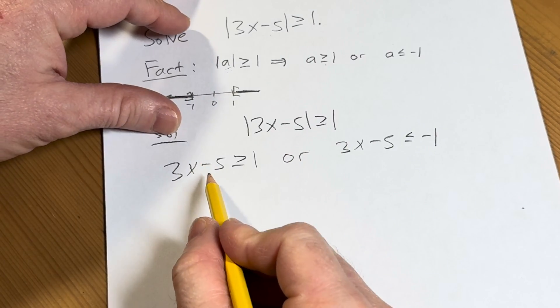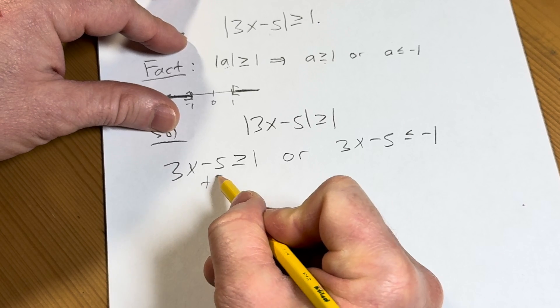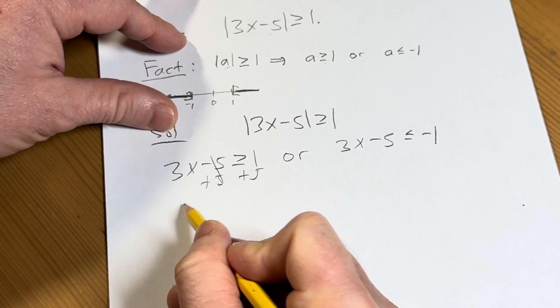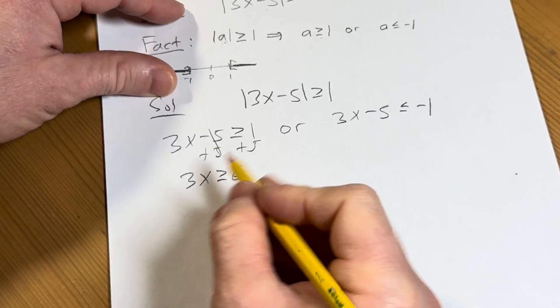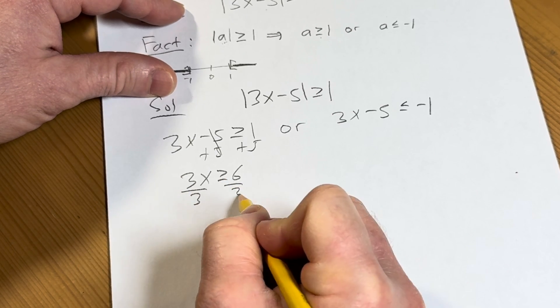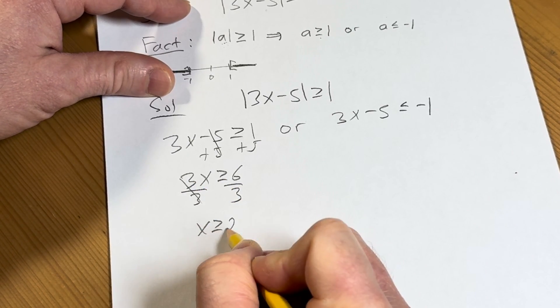Let's solve each of these now algebraically. This is pretty easy. We can add 5 here to both sides of this inequality. That gives us 3x greater than or equal to 6. Divide by 3, we get x greater than or equal to 2.